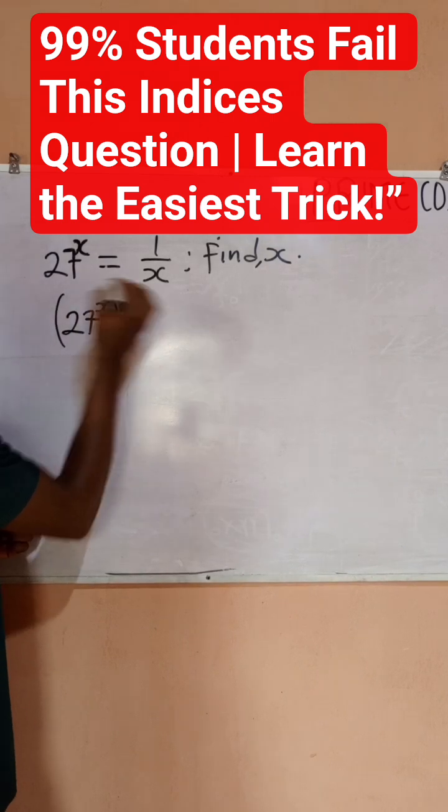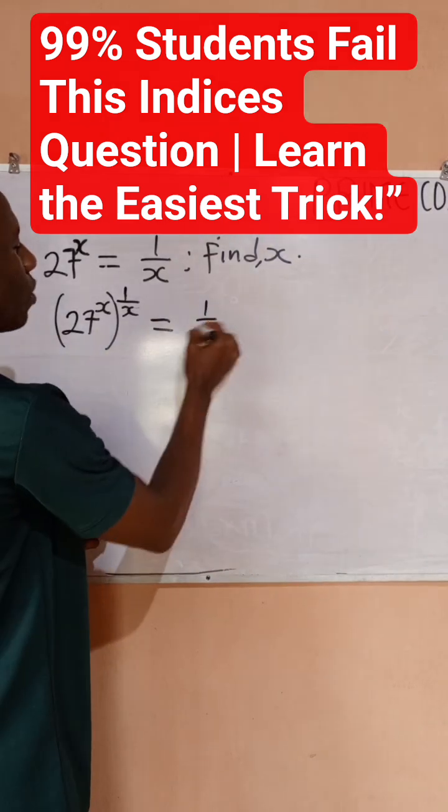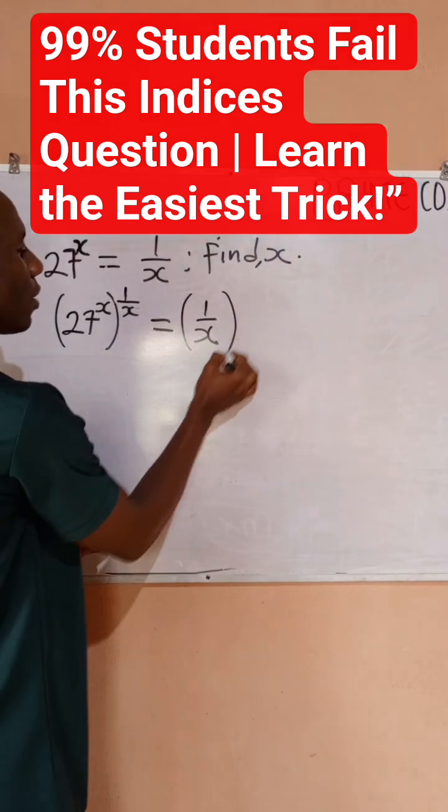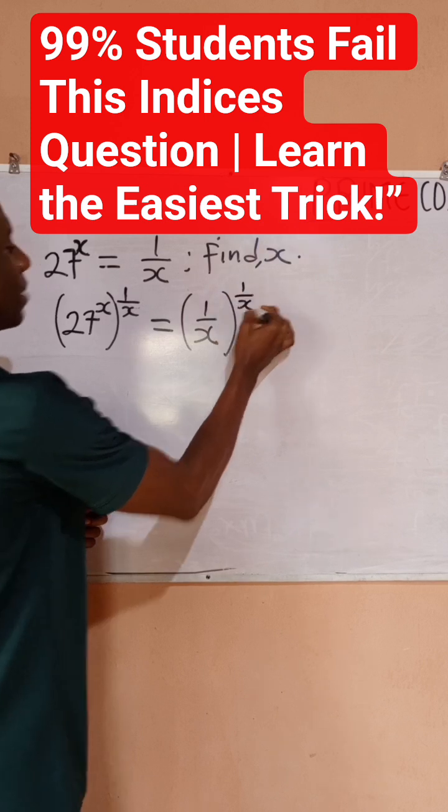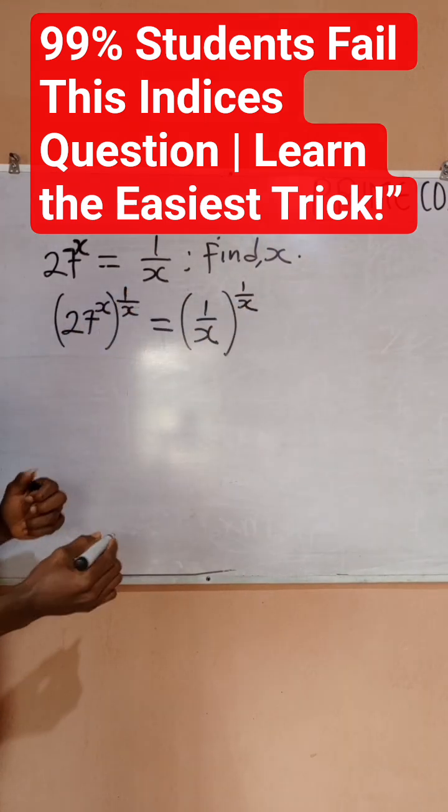I'll do the same thing to the right hand side, so I have 1 over x all raised to the power 1 divided by x. So I've multiplied both powers by 1 divided by x.